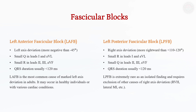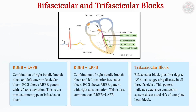A bifascicular block involves RBBB combined with either LAFB or LPFB. While often asymptomatic, it may progress to complete heart block, particularly in the setting of ischemia or acute infarction. Trifascicular block, which includes bifascicular block plus first-degree AV block, suggests widespread conduction system disease and often warrants consideration for permanent pacemaker implantation.